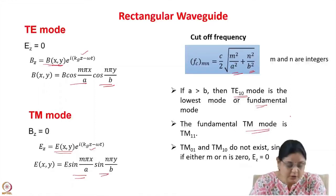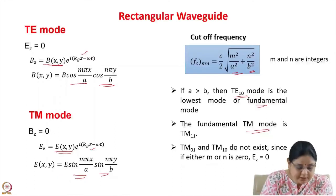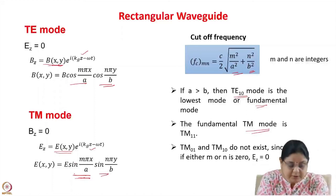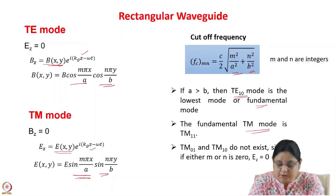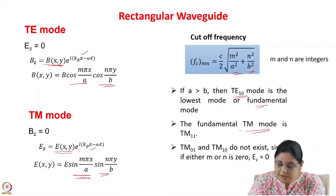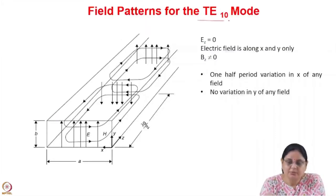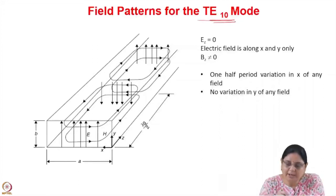For the TM mode, m and n take values 1, 2, 3, and so on — they cannot be 0. If either m or n is 0, the electric field Ez goes to zero, and since Bz is already 0, all field components vanish. So TM01 and TM10 modes do not exist. The TE10 mode is the fundamental mode in the rectangular waveguide.